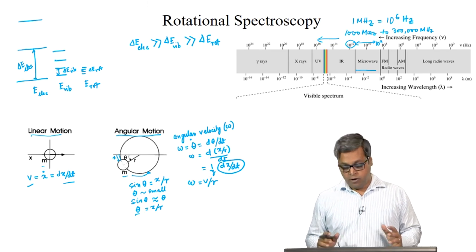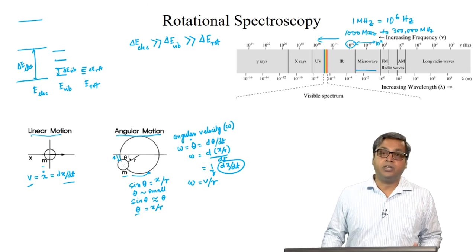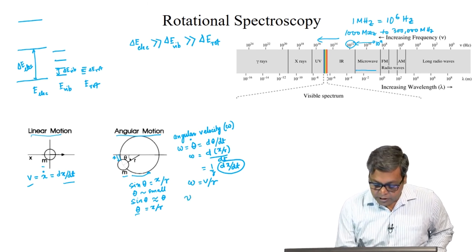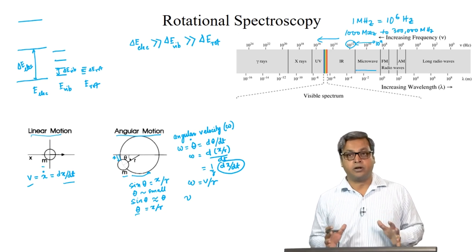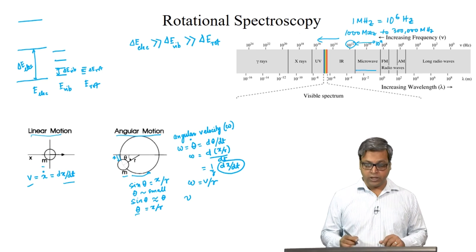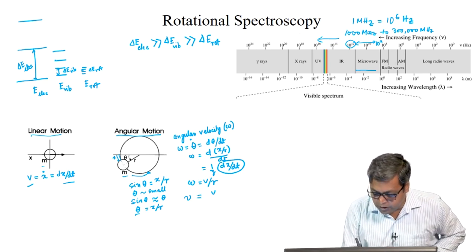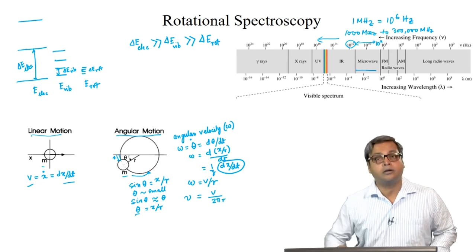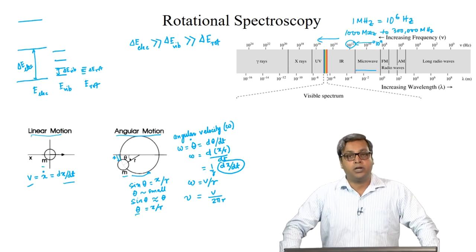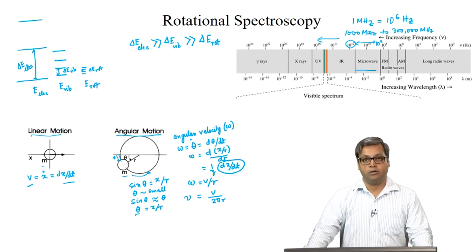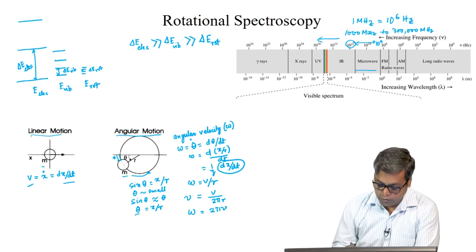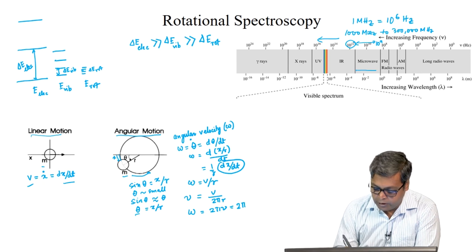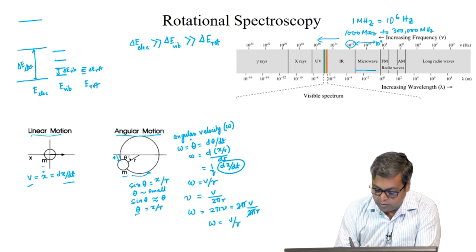For a particle moving with linear velocity V, the frequency nu is how many revolutions of circumference 2πr are completed per unit time. So nu equals V by 2πr. And as for every revolution it sweeps out an angle of 2π, we know that omega equals 2πnu. So we can write omega equals 2π times V/2πr, and we can again show that omega equals V by r.